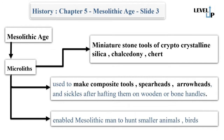One of the key aspects of the Mesolithic Age was the reduction in size of well-established tool types. The characteristic tools of this age were microliths — miniature stone tools usually made of cryptocrystalline silica, chalcedony, or chert, in both geometrical and non-geometrical shapes. They were not only used as tools themselves but also used to make composite tools such as spearheads, arrowheads, and sickles after hafting them on wooden or bone handles.